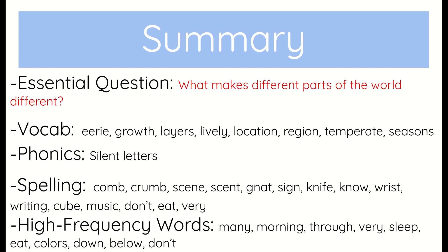So in summary, our central question is what makes different parts of the world different. Our vocab words are eerie, growth, layers, lively, location, region, temperate, and seasons. Our phonics focus is silent letters. Our spelling words are comb, crumb, scene, scent, gnat, sign, knife, no, wrist, writing, cube, music, don't, eat, and very. Our high frequency words are many, morning, through, very, sleep, eat, colors, down, below, and don't.